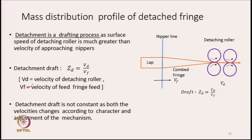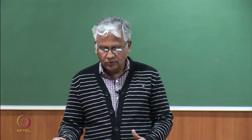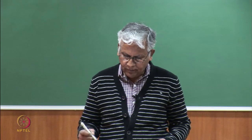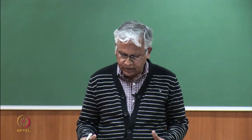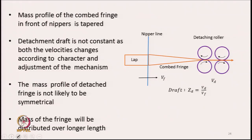The detachment draft is not really constant as both velocities change according to the character and adjustment of the mechanisms. The ratio Vd by Vf is not constant because the detaching roller speed is not constant, and as the nipper assembly moves forward, its velocity is also not constant. Hence the draft is never really constant, though there is a drafting zone. This variable draft is going to affect the mass profile of the fringe.